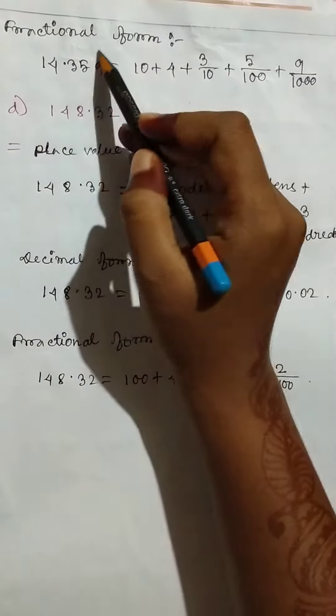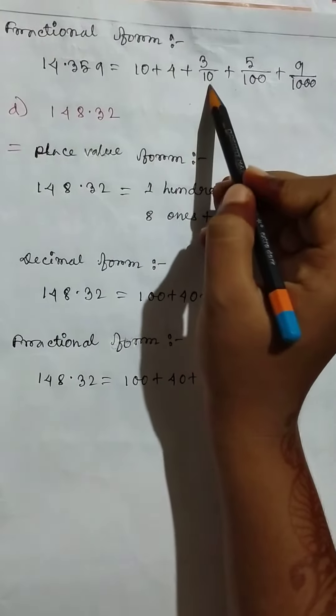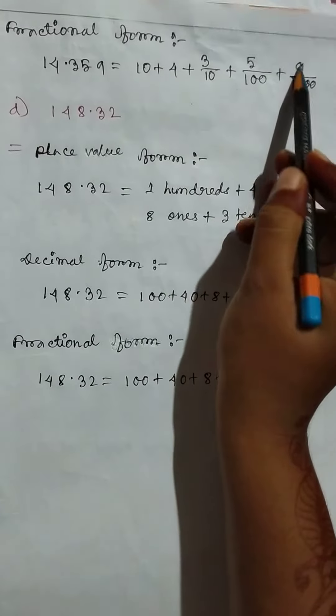Then fractional form: 10 plus 4 plus 3 by 10 plus 5 by 100 plus 9 by 1000.